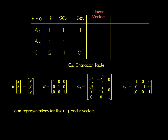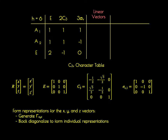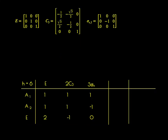We're going to use these three symmetry operations to form representations for the x, y, and z vectors, because we have all the information required from these three symmetry operations represented as 3×3 matrices. We're going to do this in two different ways: one by generating a reducible representation for the x, y, and z vectors combined and then reducing that into irreducible representations, and the second by block diagonalization of the 3×3 symmetry operation matrices. Starting with the first method, we generate characters using these three matrices.